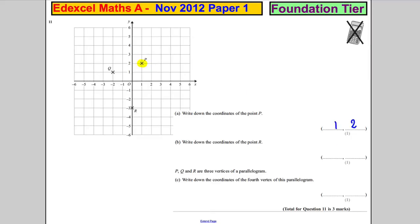Write the coordinates of point R. Now R is down here. You go nothing across, and you go 3 down. So it's 0, negative 3.